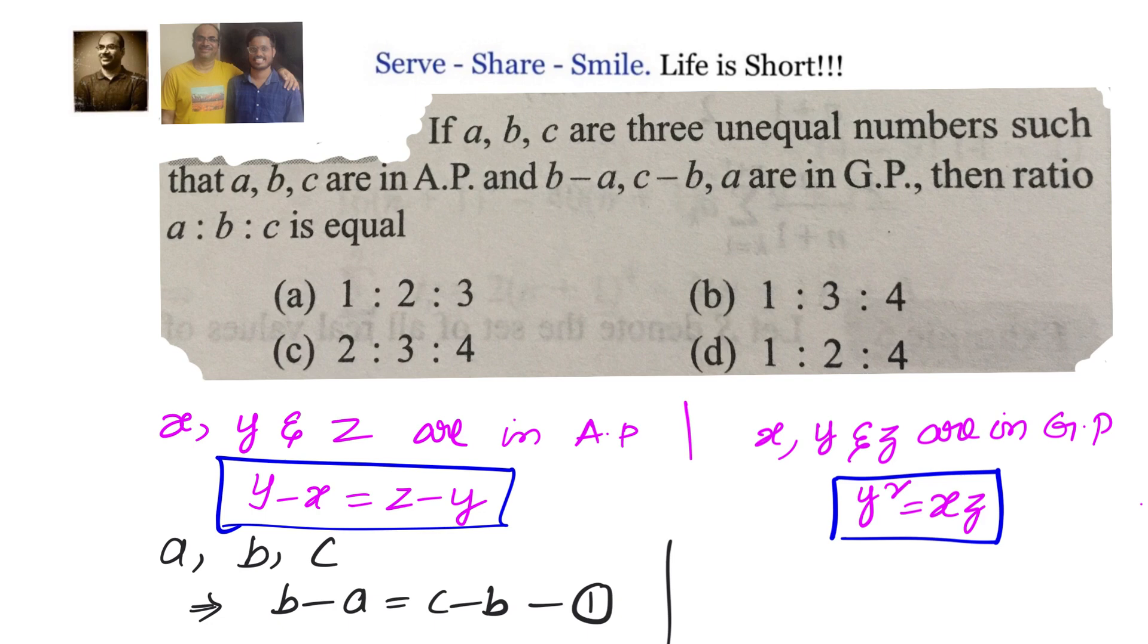Second, X, Y, Z are in GP. Here we have B minus A, C minus B, and A are in GP. We know Y square equals XZ, that means C minus B whole square equals A into B minus A. This is our second equation.